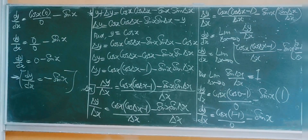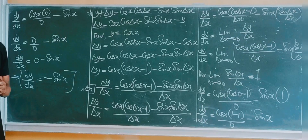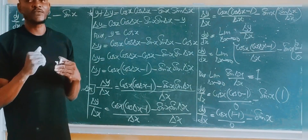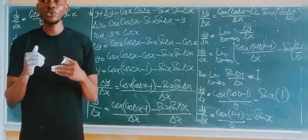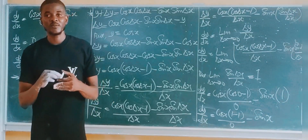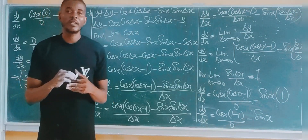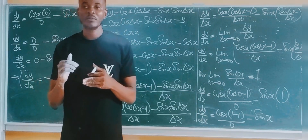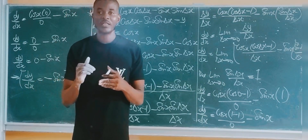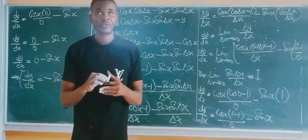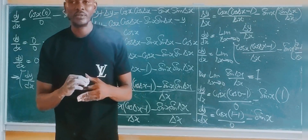So dy/dx is equal to minus sin x. That is how you differentiate cos x from first principle. In the next video, I am going to show you how to differentiate tan x from first principle. If you are new to the channel, please don't forget to hit the subscribe button, like the video, and share your thoughts in the comment section. I will see you in the next video.